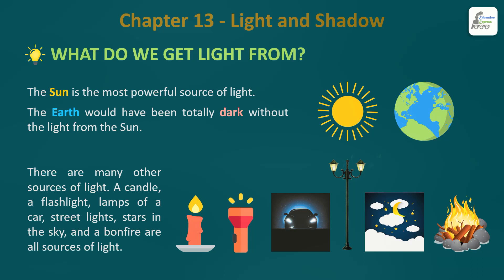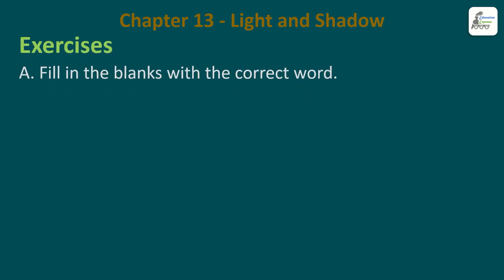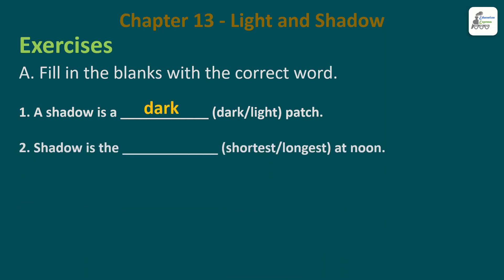You can find more sources of light and write them in the comment section. Now let's do the exercises - fill in the blanks with the correct word. First one: A shadow is a ___ patch. What is the patch? It is dark or light? It is dark patch, right? We have seen it now.